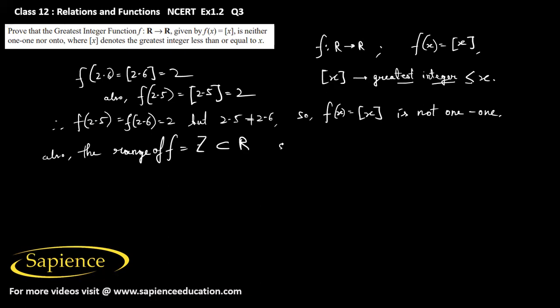Therefore, the range of the function f is not equal to the codomain, but it is a subset of the codomain, which is the set R. So therefore the function f is not onto.